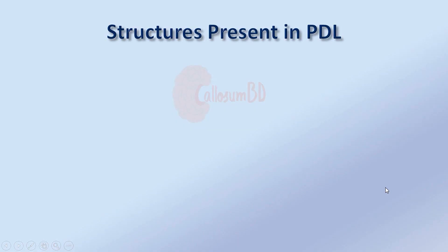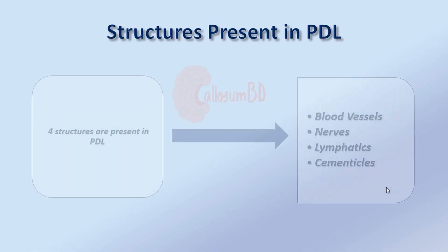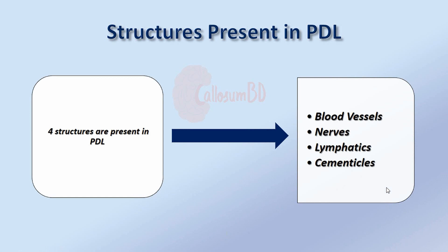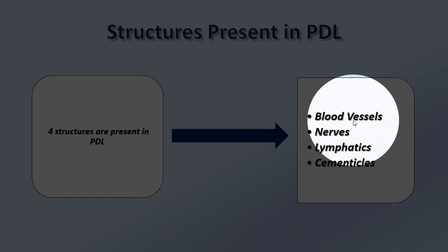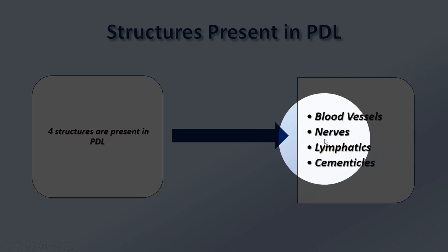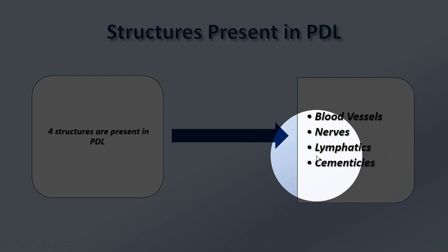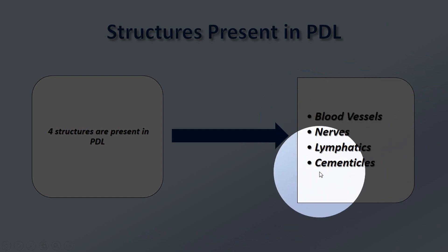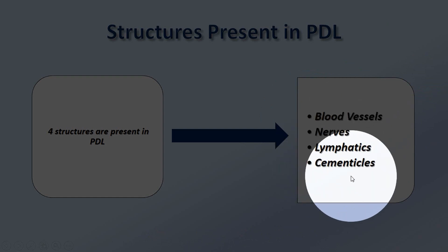Four structures are present in the periodontal ligament: blood vessels, nerves, lymphatics, and cementicals.